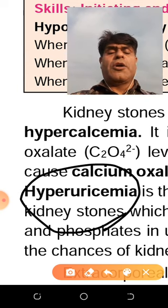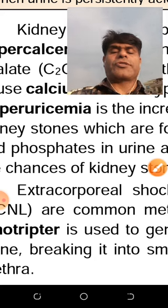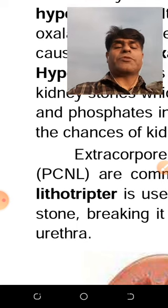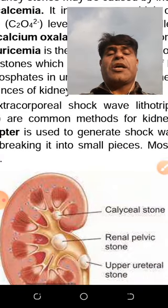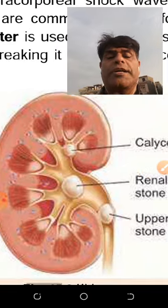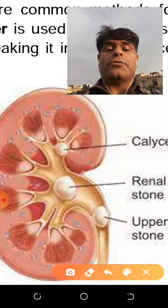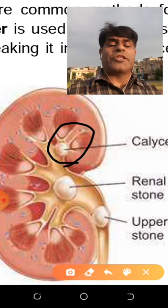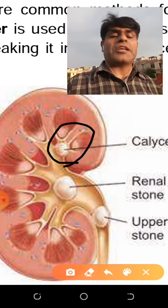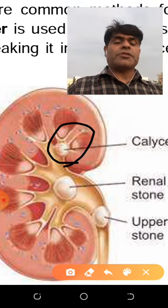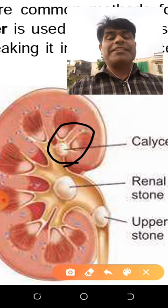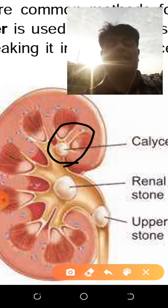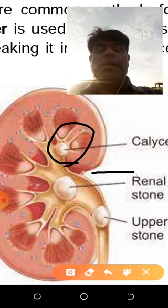The lithotripsy machine supplies X-rays that break large stones into smaller ones. Now I will tell you the areas in which stones can occur. Looking at the longitudinal section of the kidney — you cut the kidney longitudinally to view its internal structure — one stone is visible in the renal pelvis. This is a common location for renal stones.